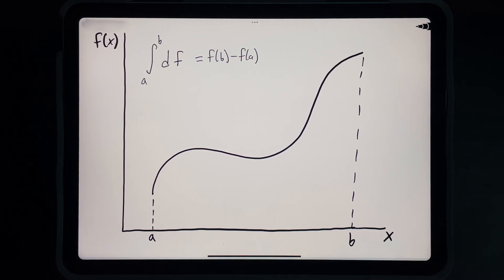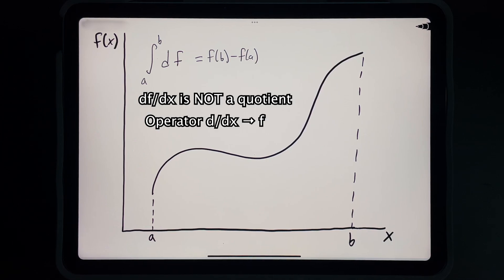Mathematically, you can't actually do this. df dx is not a quotient, but an operator ddx acting on f. But we'll write our formula like this just to help develop intuition.